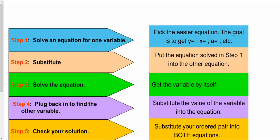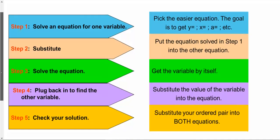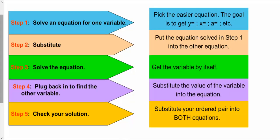So a few ways for us to do any type of system through substitution. Step 1 is to solve an equation for a variable — either y equals or x equals. As soon as we have that, we're able to substitute. Once we substitute that in, we're solving the equation, and then we plug back in our other variable to solve for it. So if we got x is 5, we plug that back in to figure out what y equals. Once we have our y value, we need to check our solution by plugging that ordered pair into whichever equation we didn't already use.